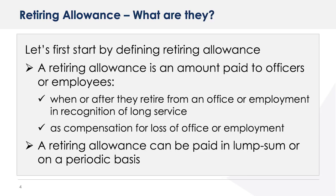Let's first start by defining what a retiring allowance is. A retiring allowance is an amount paid to officers or employees when or after they retire from an office or employment, in recognition of long service or as compensation for loss of office or employment. A retiring allowance can be paid in a lump sum or on a periodic basis. In other words, a retiring allowance can be what it sounds like for when an employee retires, or it can be what most people would call a severance payment or payments package.